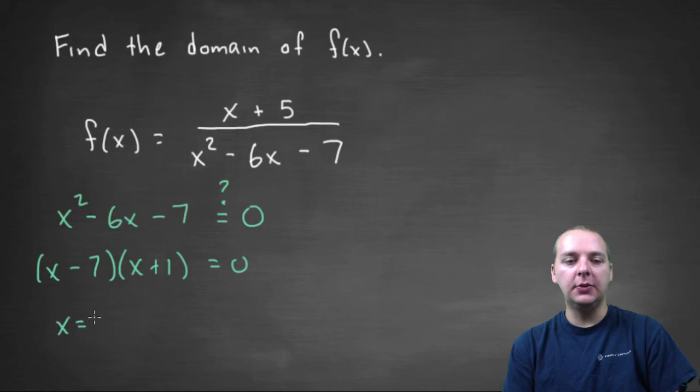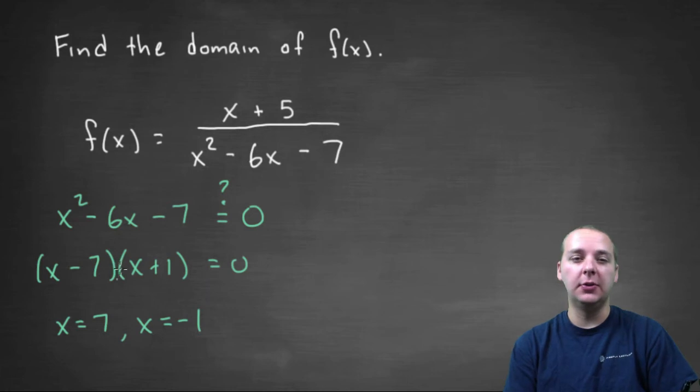So we would get x equals seven and x equals negative one, if we set each of those equal to zero there.